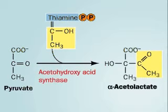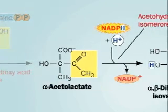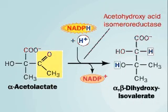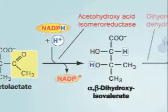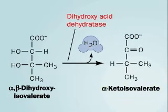Leucine synthesis begins with the addition of an acetyl group from thiamine pyrophosphate to pyruvate, forming alpha-acetolactate. Using NADPH plus H+, that molecule is reduced, forming alpha-beta-dihydroxyisovalerate. A dehydration produces alpha-ketoisovalerate and a molecule of water.